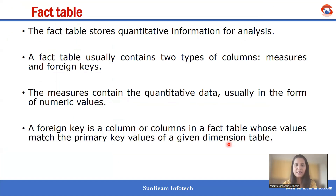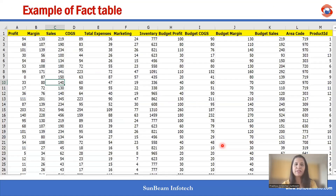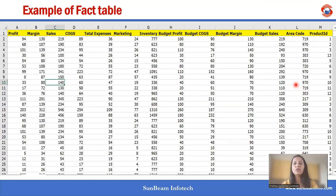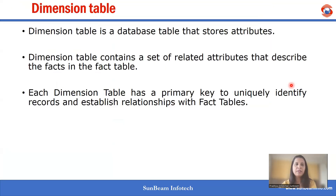Let us see an example of a fact table. This fact table contains only numerical data — even area code and product ID are numerical data.